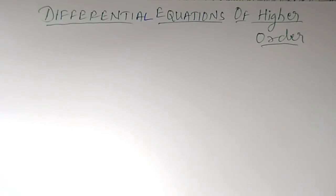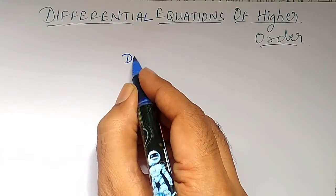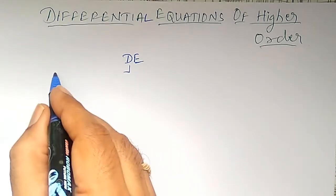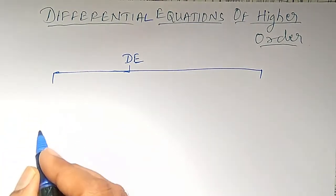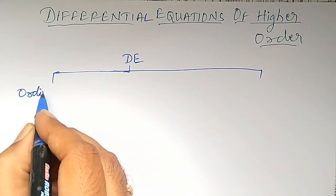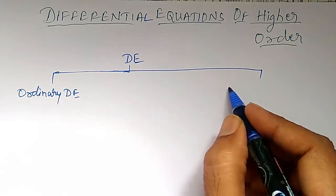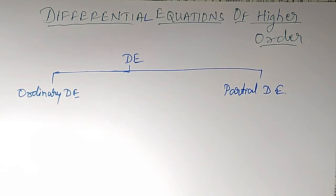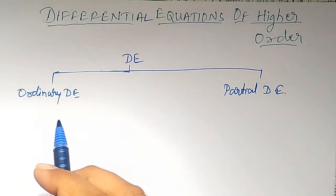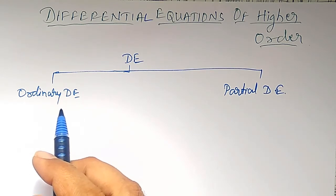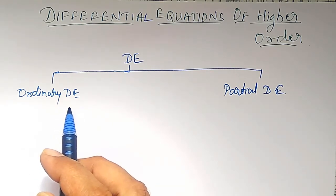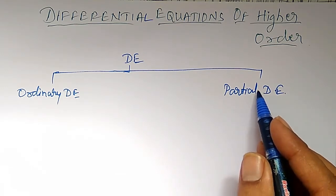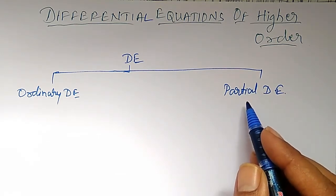How many types of differential equations are there? How to divide them, and which type are we going to study now? This differential equation is mainly divided into two parts: ordinary differential equations and partial differential equations. If the differential equation contains ordinary derivatives, such equations are known as ordinary differential equations, and those containing partial derivatives are known as partial differential equations.